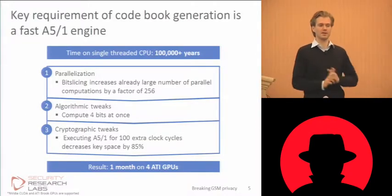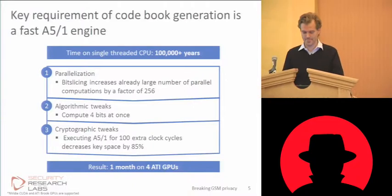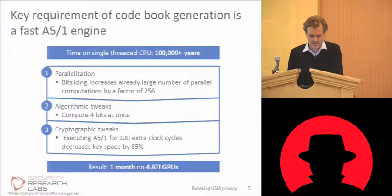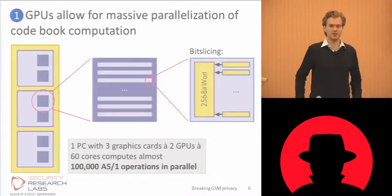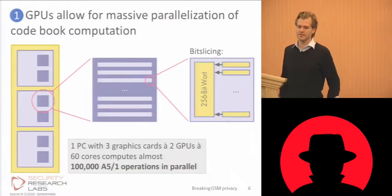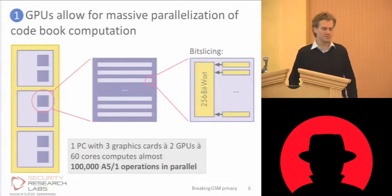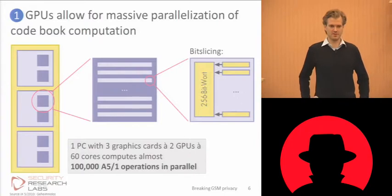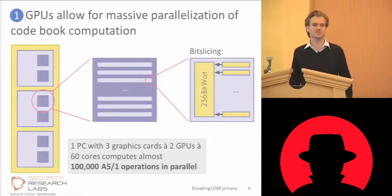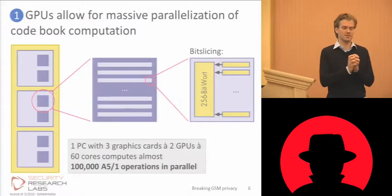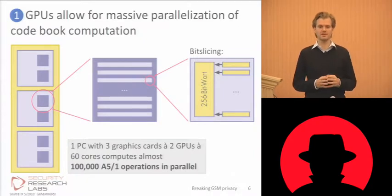And then after all, exploiting a statistical property of A5/1 to make this a lot cheaper to compute. As our target, we are using GPU chips on graphics cards. They're almost as efficient as FPGAs, but much easier to program and much more available. So GPUs give us vast parallelization potential. You can stick up to six GPUs into a single PC — three PCI Express cards with two GPUs each. On each of these GPUs there are up to 60 computing cores, where your Intel processor has two or four.